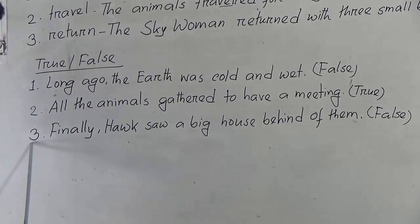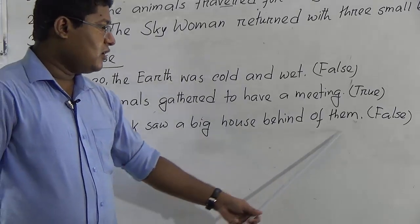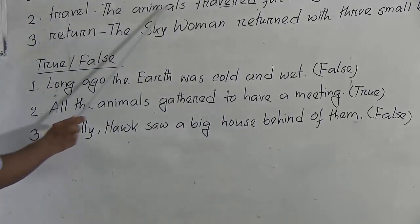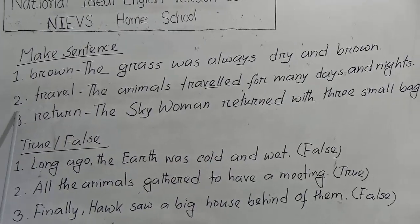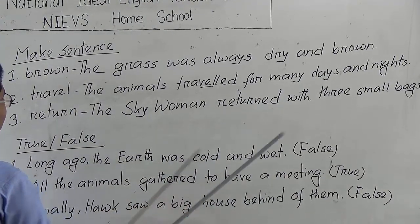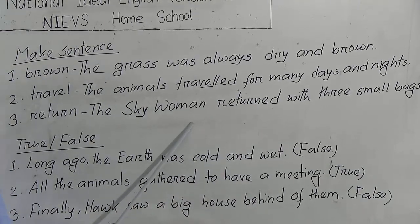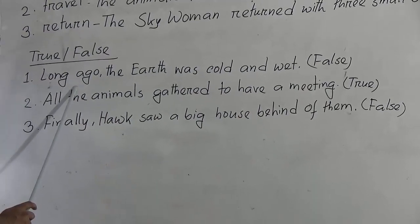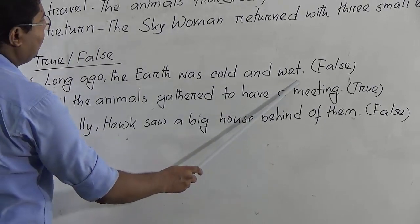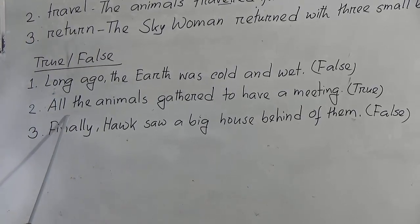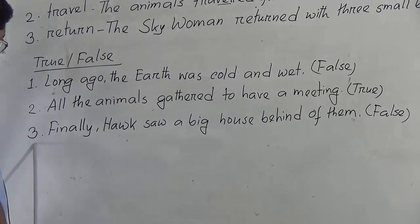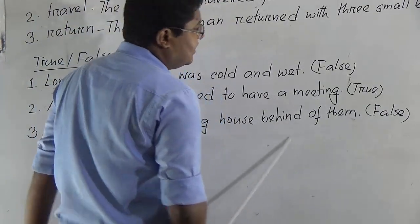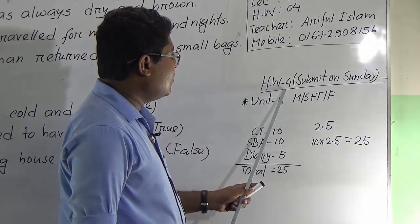Let me repeat the answers. Make sentence: (1) brown — 'The grass was always dry and brown.' (2) travel — 'The animals traveled for many days and nights.' (3) return — 'The Sky Omen returned with three small bags.' True/False: (1) 'Long ago the earth was cold and wet' — FALSE. (2) 'All the animals gather to have a meeting' — TRUE. (3) 'Finally, hawk saw a big house behind of them' — FALSE.